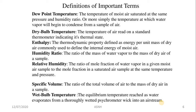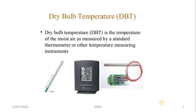There are various terms related to psychrometry: dew point temperature, dry bulb temperature, enthalpy, humidity ratio, relative humidity, specific volume, and wet bulb temperature. We will discuss each one by one.